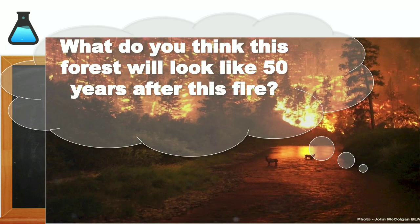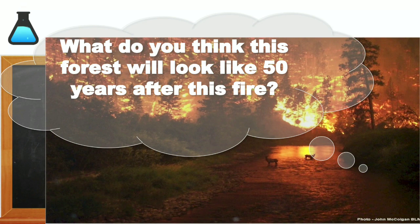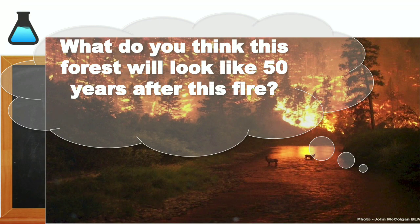Let's start by looking at this picture of a forest fire. We know this ecosystem will be devastated after this fire rips through it. Many organisms will lose their habitats, the nutrients will change, and the communities will look very different. But what do you think this will look like in 50 years? Will the same community of organisms be able to live there? The answer to this question can be solved with ecological succession.